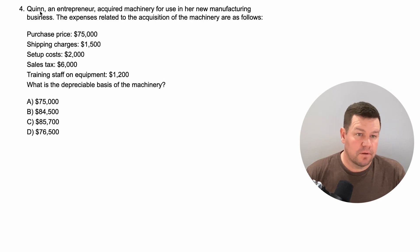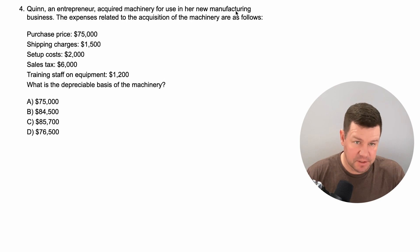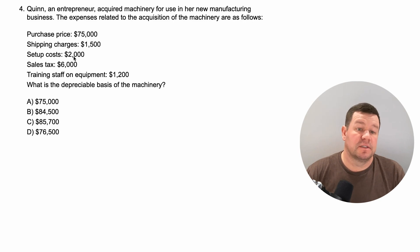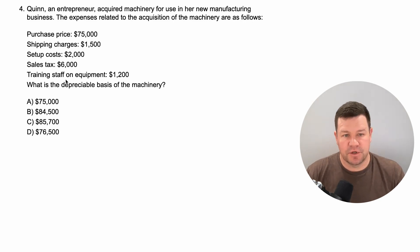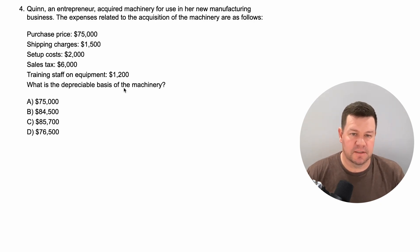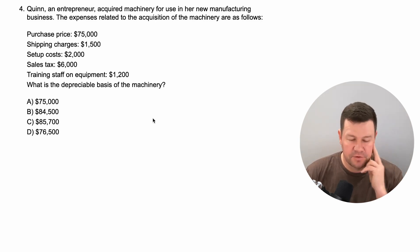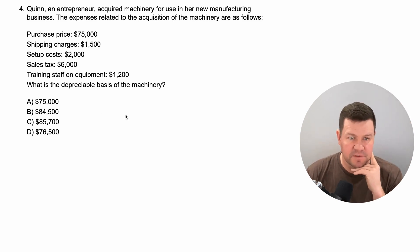Question four: Quinn, an entrepreneur, acquired machinery for use in her new manufacturing business. The expenses related to the acquisition are: purchase price $75,000, shipping charges $1,500, setup costs $2,000, sales tax $6,000, and training staff on the equipment $1,200. What is the depreciable basis of the machinery? Pause the video and make your own attempt based on what we've learned from the previous questions.